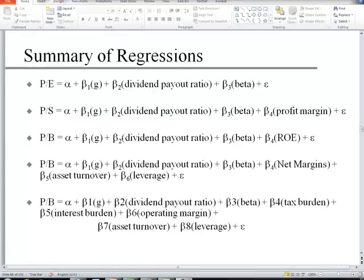What you're looking at here is a slide from class. These are the five regression models we walk through. The first was the PE ratio as a function of growth, dividend payout ratio, and beta — PE is the Y factor and growth, dividend, and beta are the X variables. The second was price to sales with growth, dividend payout, beta, and profit margin. Numbers three, four, and five are all price-to-book models: the first includes return on equity, the second breaks ROE into three factors, and the last breaks ROE into five factors.